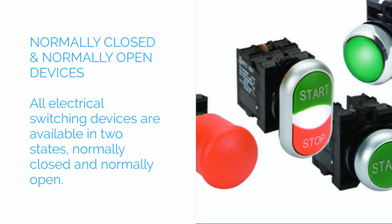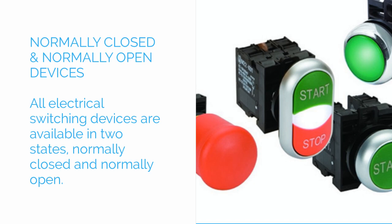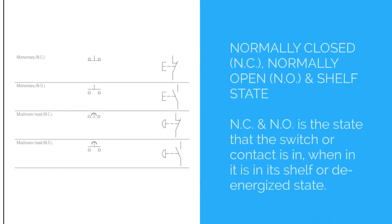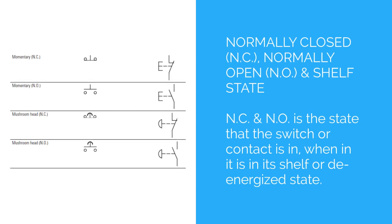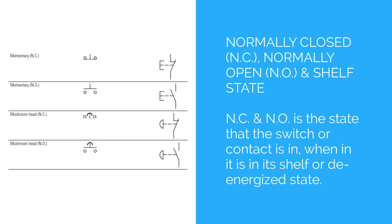All electrical switching devices are available in two states: normally closed and normally open. Normally closed, normally open, and shelf state. Normally closed and normally open is the state that the switch or contact is in when it is in its shelf or de-energized state.